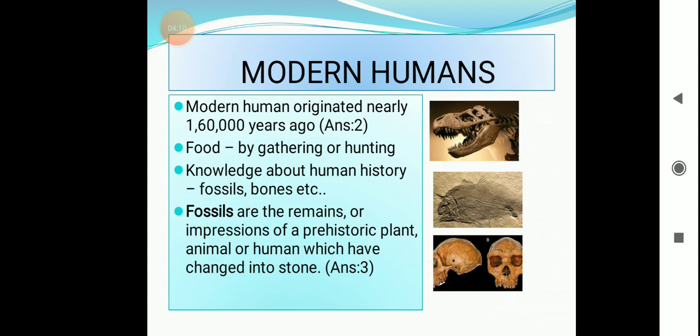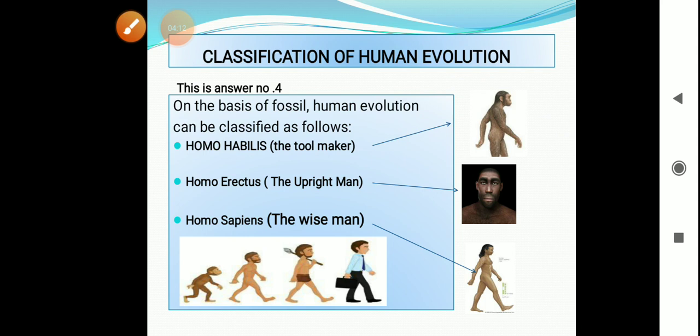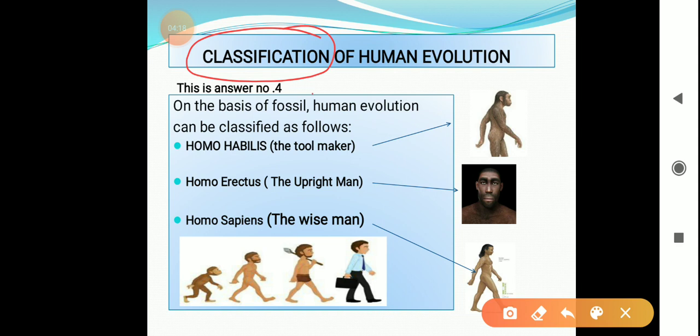Now on the basis of these fossils, human evolution can be classified as under three types: Homo habilis, Homo erectus, and Homo sapiens.